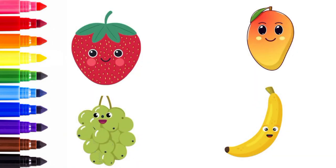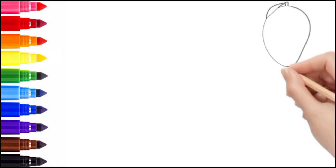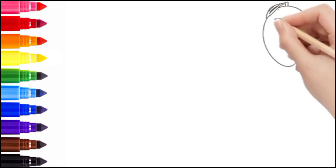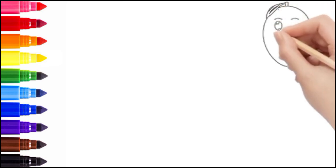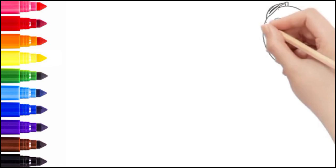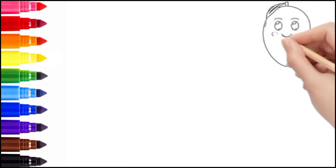Alright, let's get our sketchbooks ready and begin with our first fruit, the mango. Start by drawing a smooth oval shape, slightly pointed at the bottom, with a cute leaf on top. And don't forget, we'll add a happy little face to our mango, two big eyes and a smiling mouth.